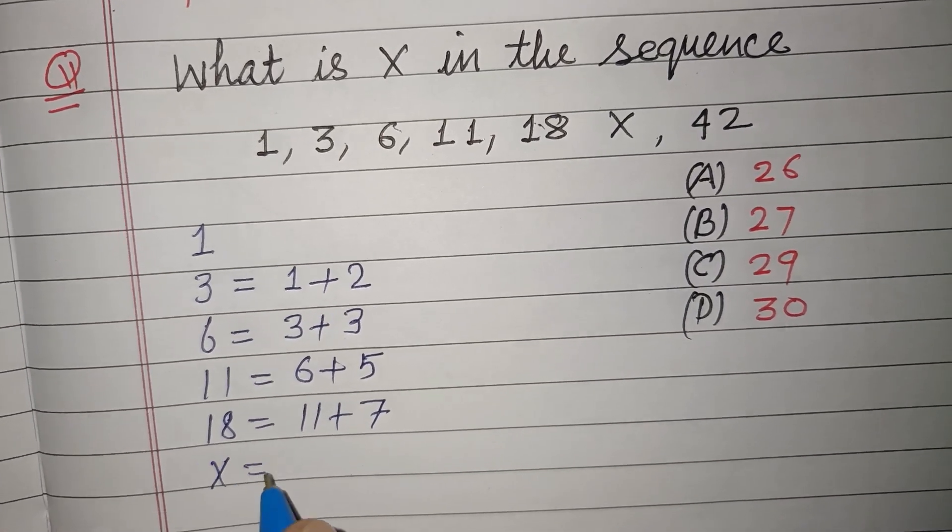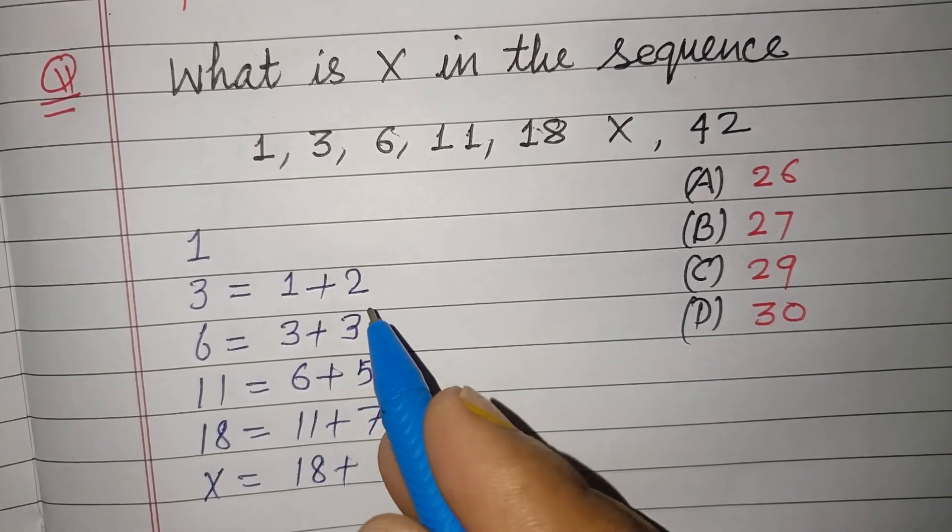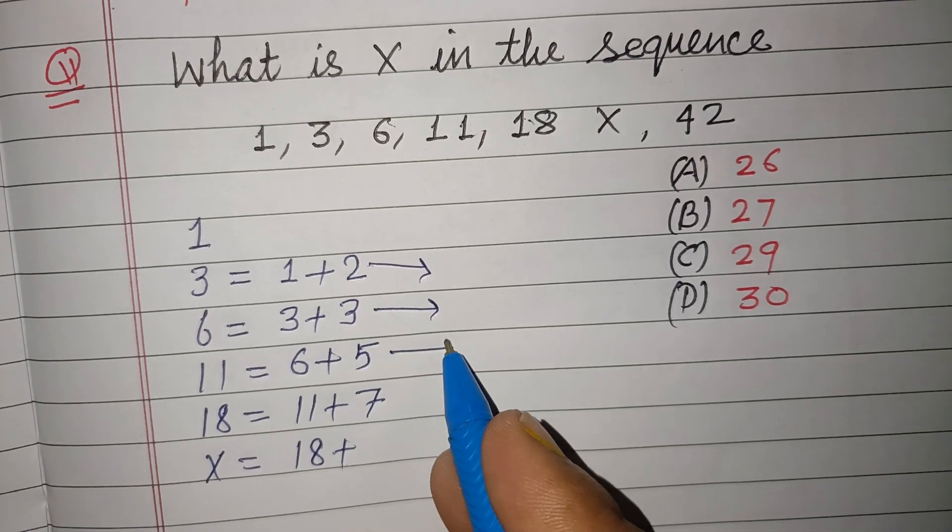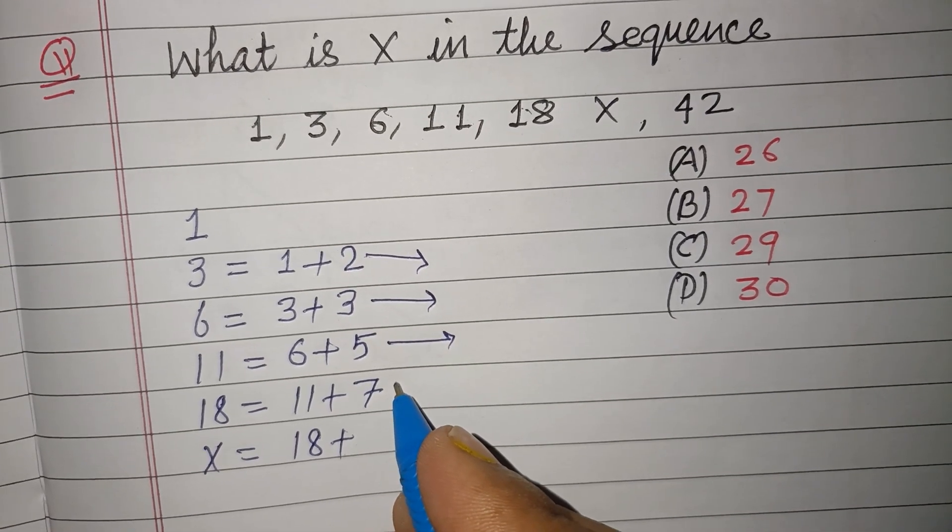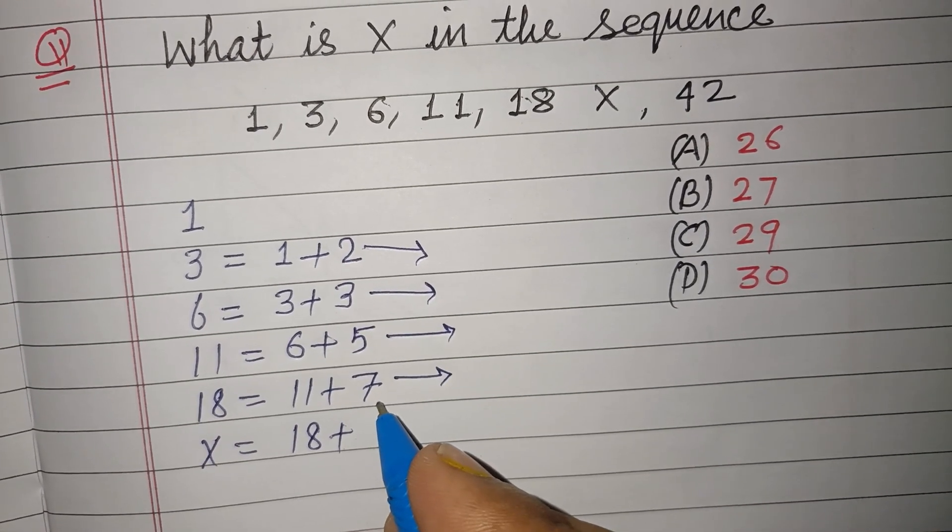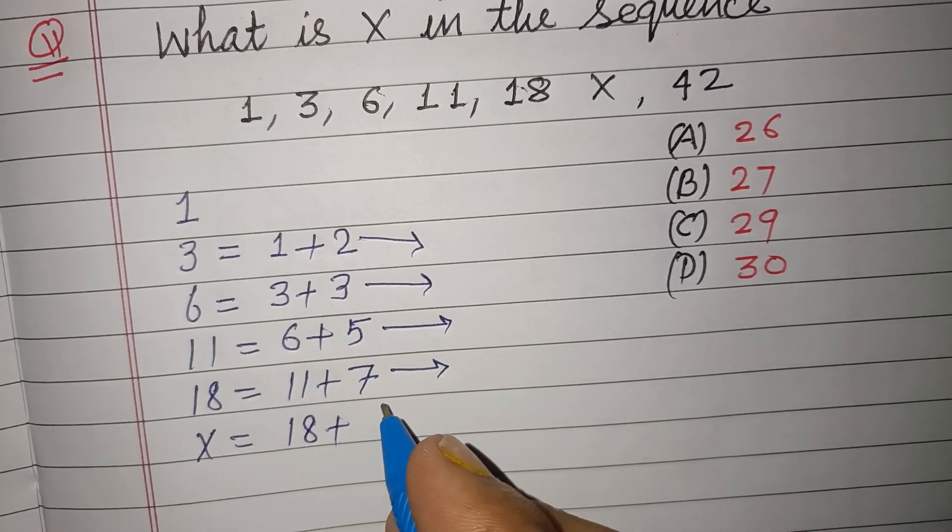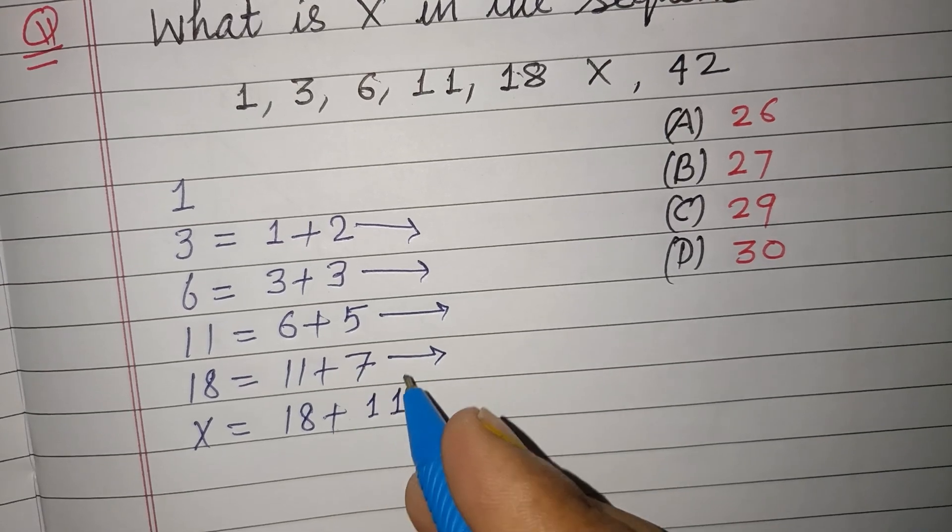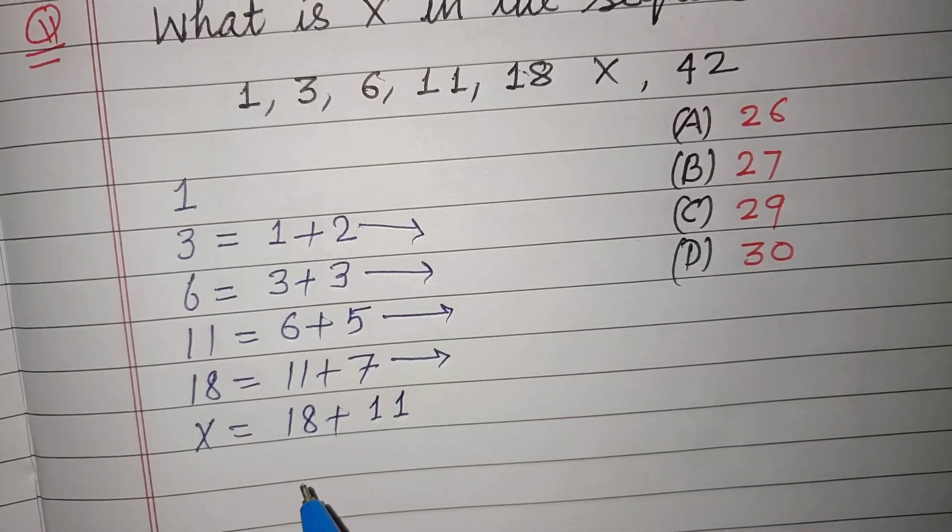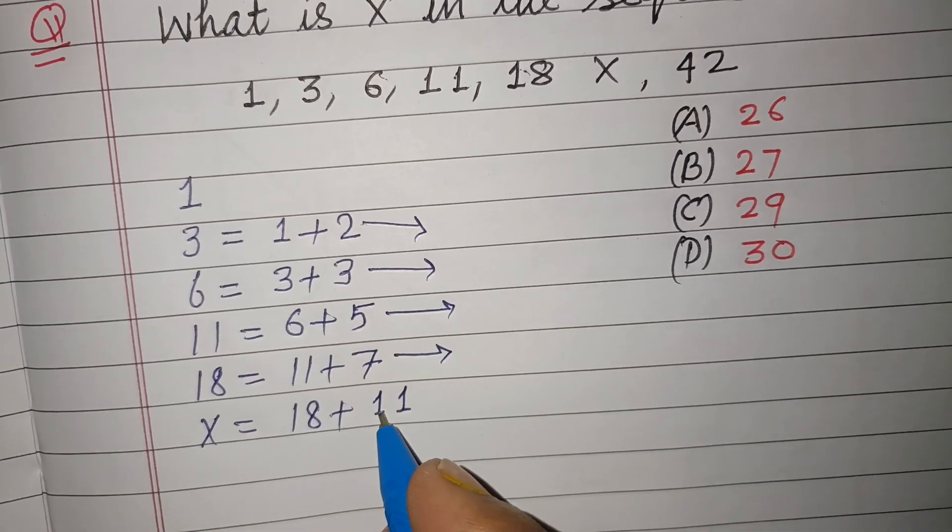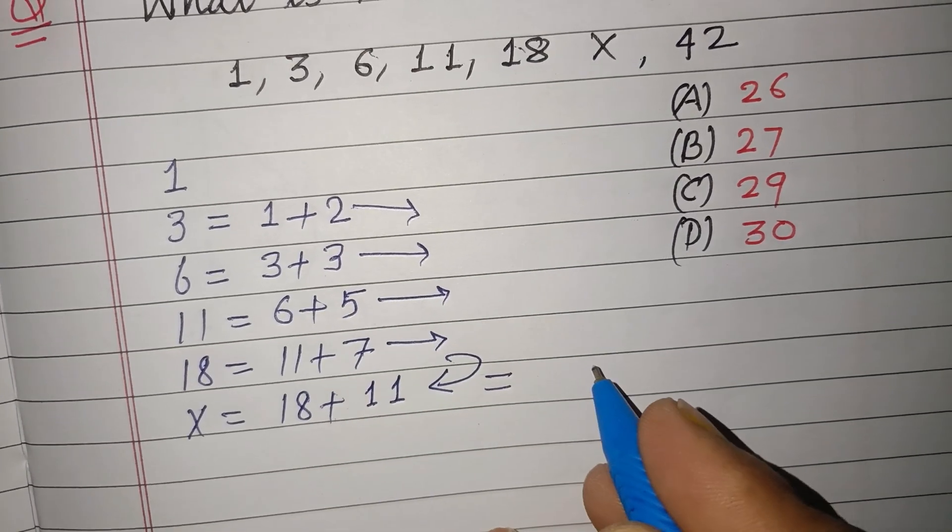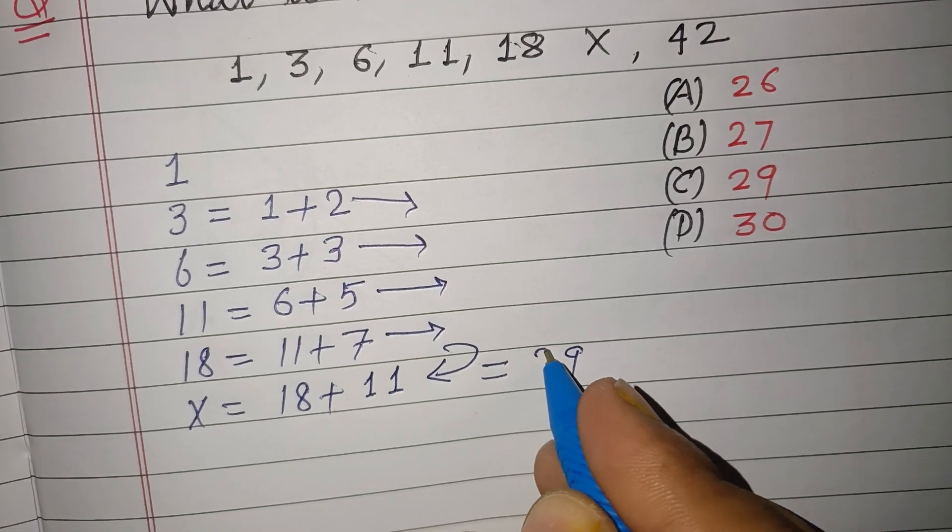Now for X, 18 plus - here the first prime number is 2, second prime number is 3, third prime number is 5, fourth prime number is 7, and the next prime number is 11. So 18 plus 11 equals 29. So X is 29.